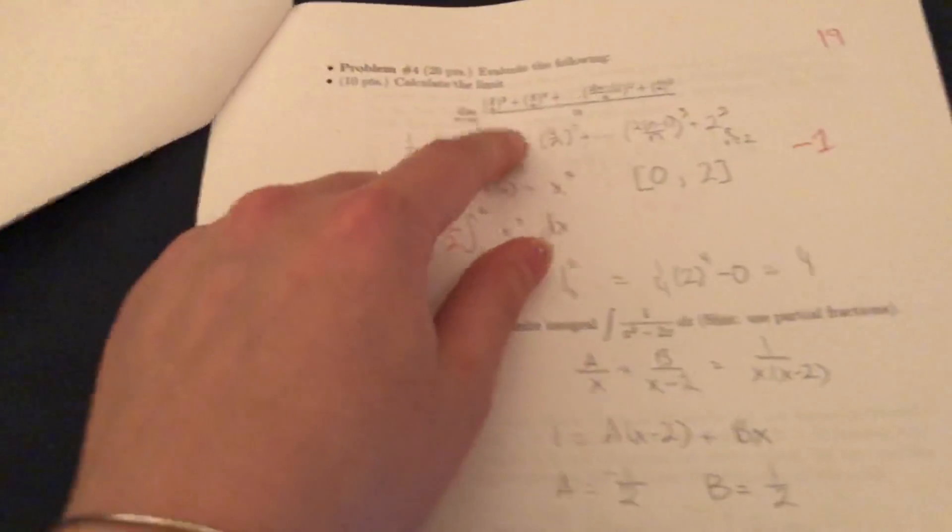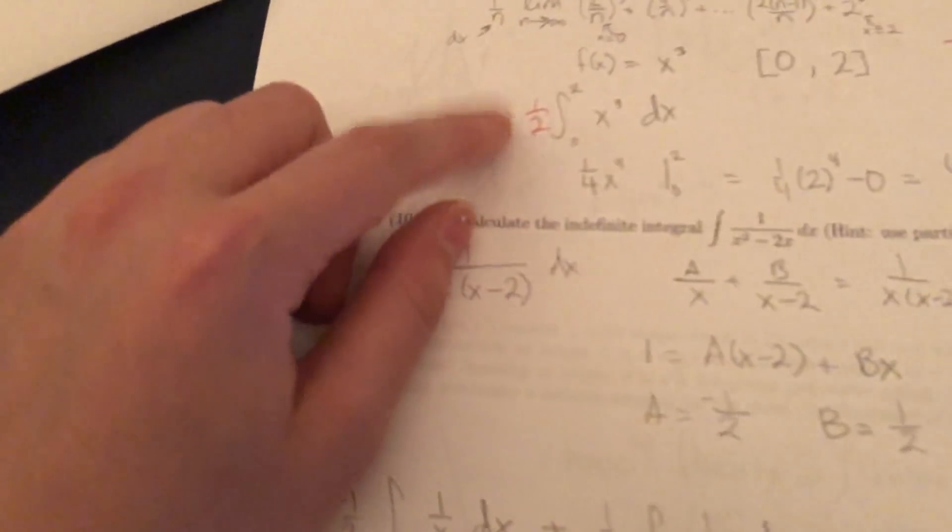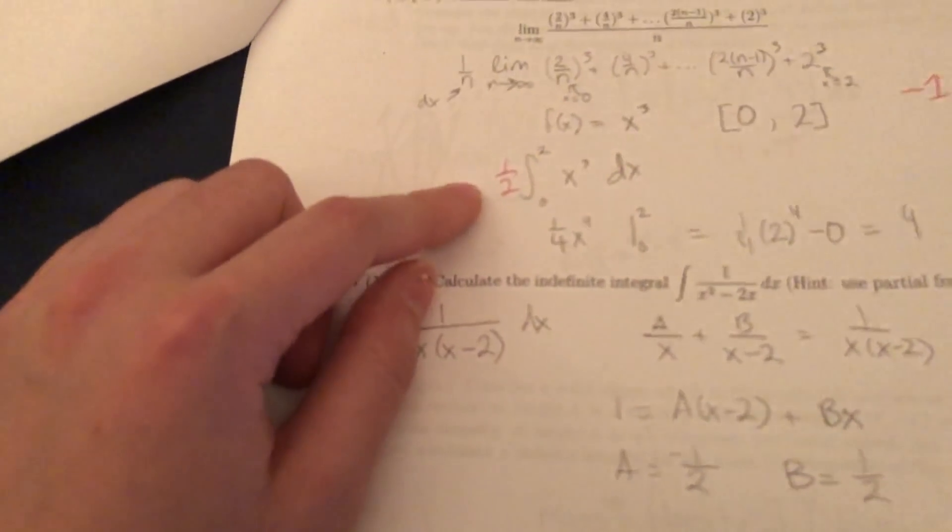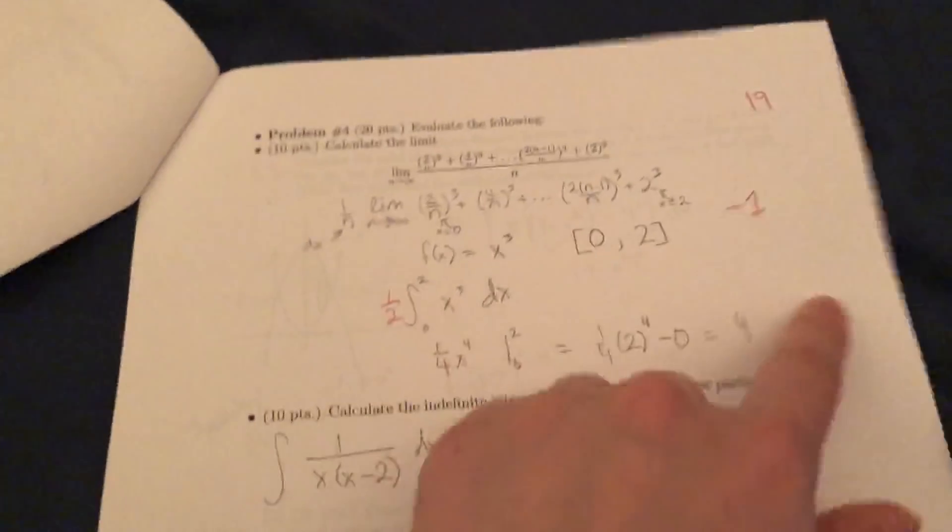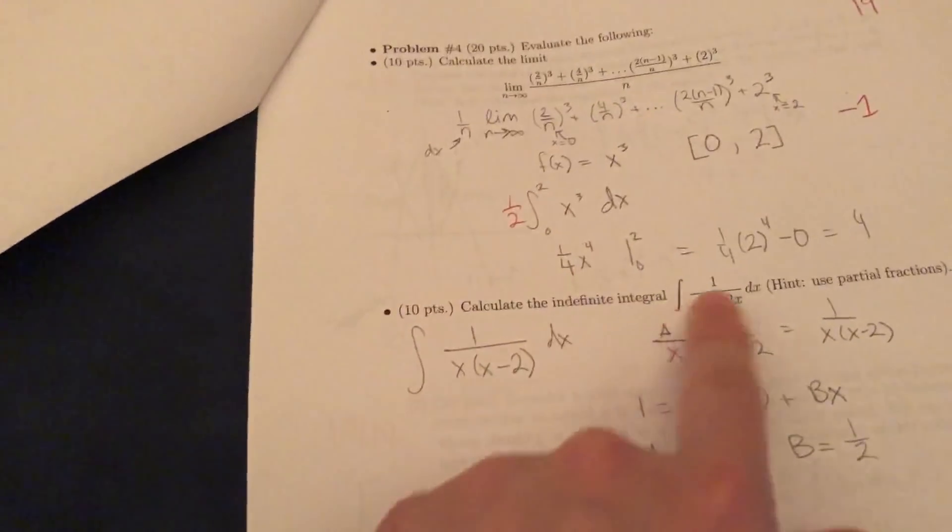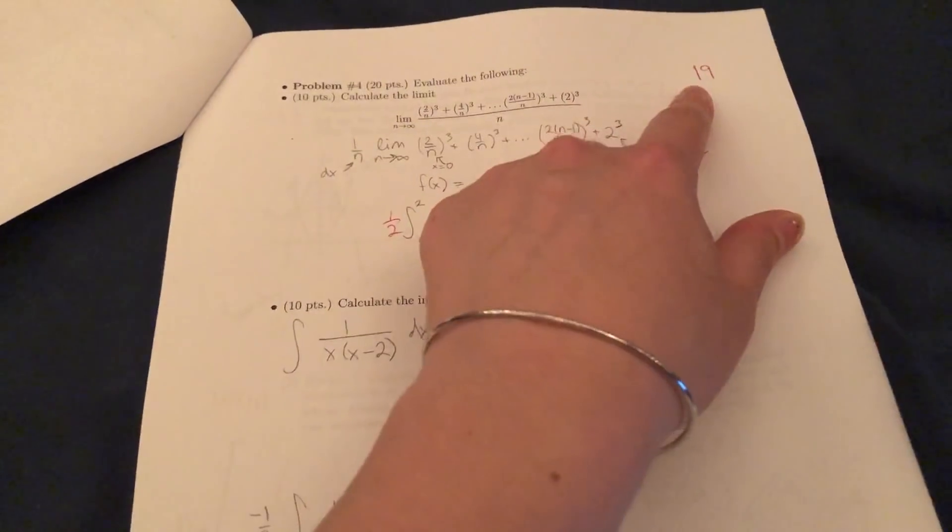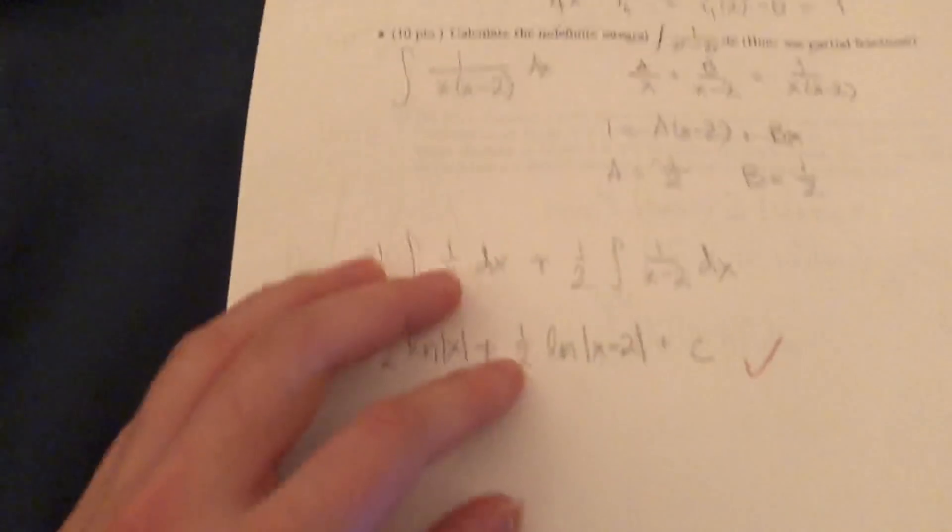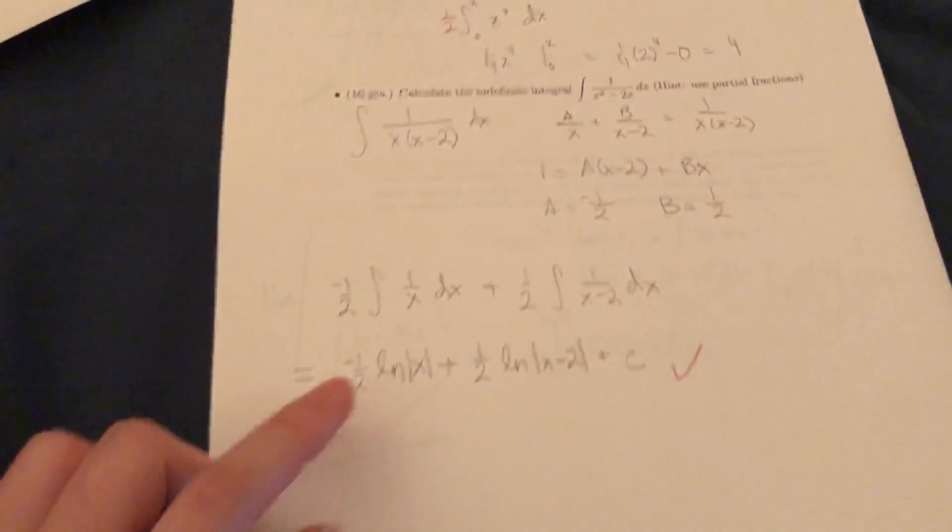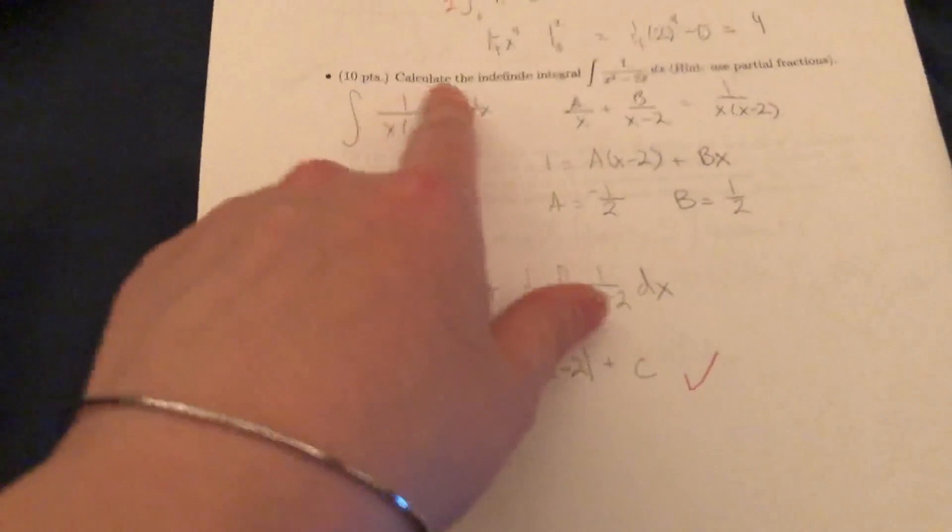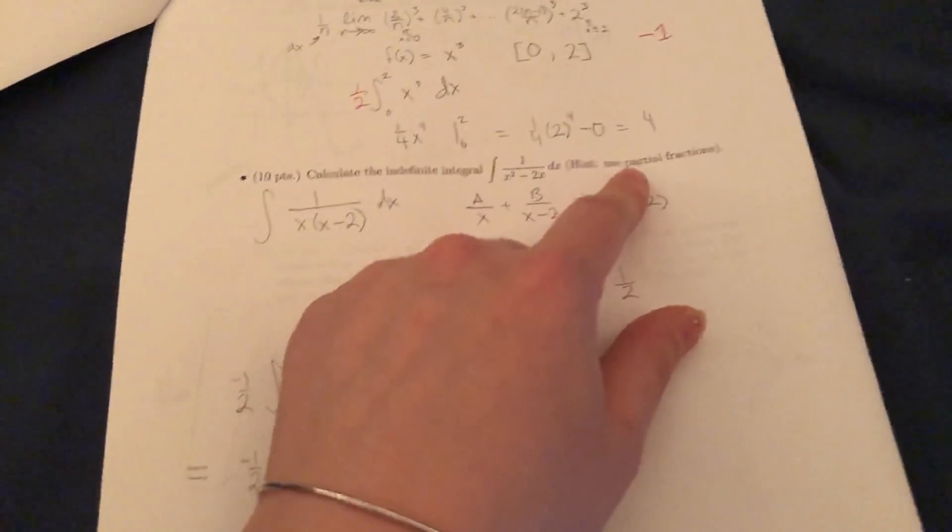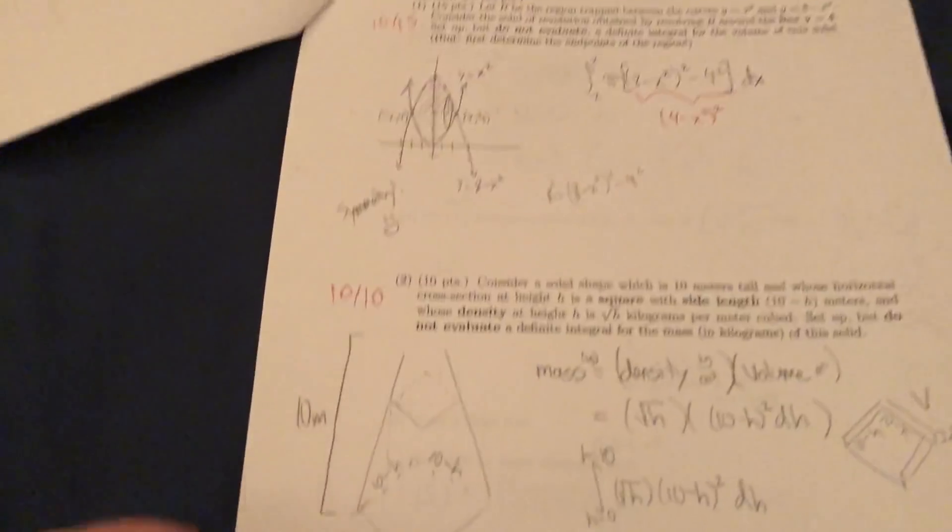Problem four is where I started to mess up. It says evaluate the following, so calculate the limit. Looks like I forgot a one half out here. Stupid me. Lost a point for that. See, if you show your partial credit, even if your answer is wrong because of some simple mistake you did, they'll still give you almost full points. I only lost one point on this problem. And then for this, I got this one right. Calculate the indefinite integral. Use partial fractions. They like to give you hints. It's not like they're trying to kill you at MIT. Just the material's hard, but they'll occasionally give you hints.